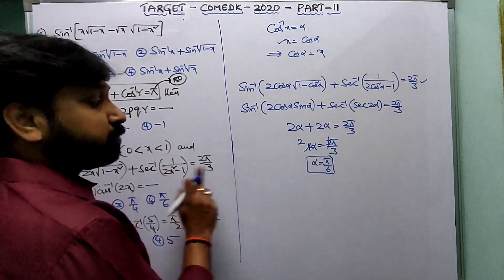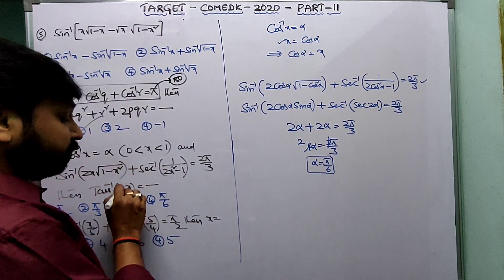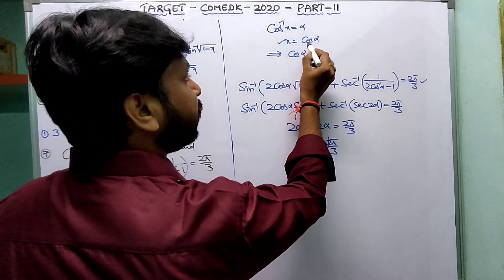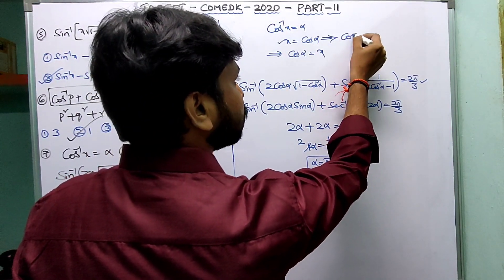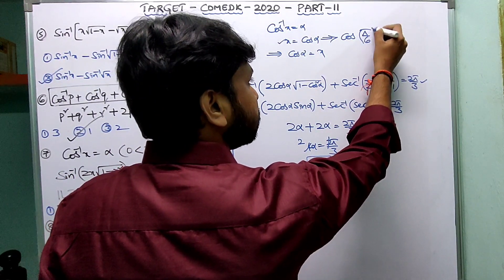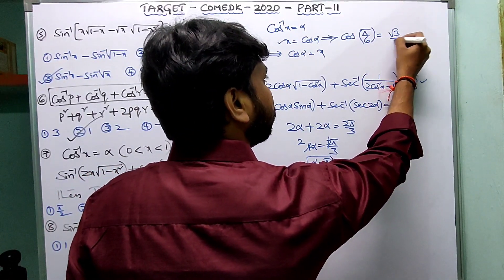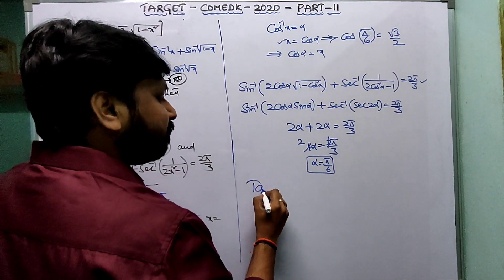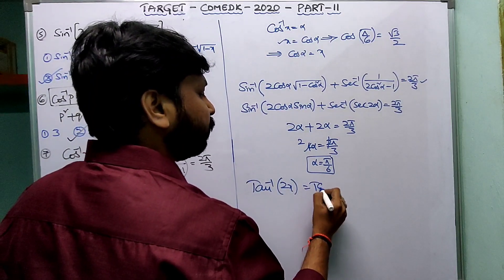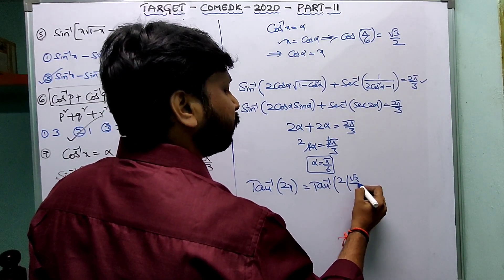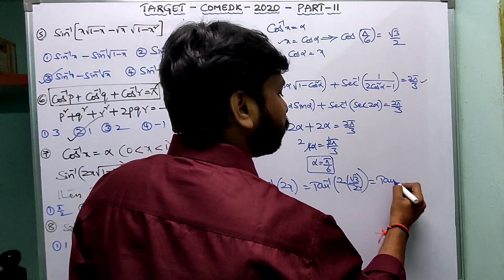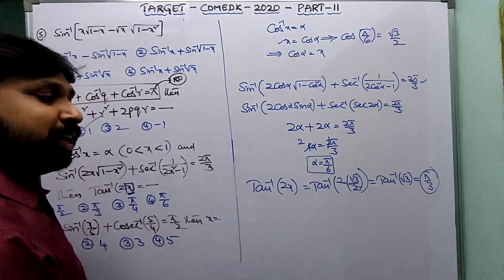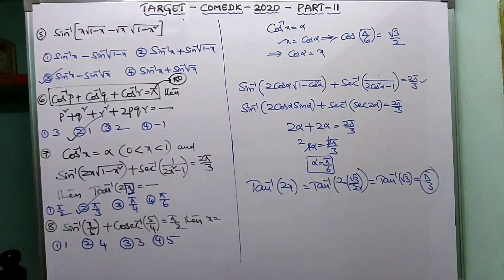Since α = π/6 and x = cosα = cos(π/6) = √3/2, the question asks for tan⁻¹(2x) = tan⁻¹(2·√3/2) = tan⁻¹(√3) = π/3. The answer is π/3.